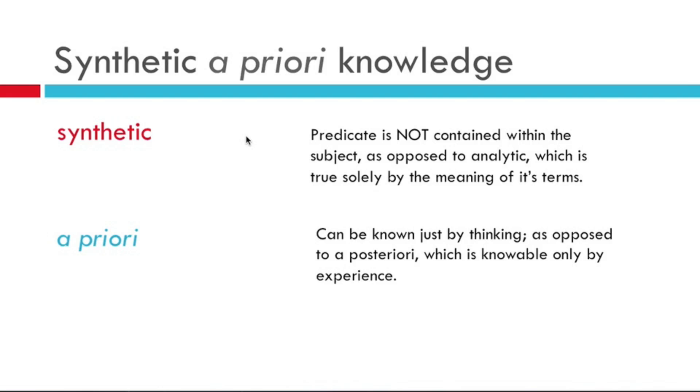A posteriori knowledge, on the other hand, is knowable only by experience. So we might say, some people are over six feet tall. That may be true, or it may not be true. We have to use our experience to determine whether or not that's true.